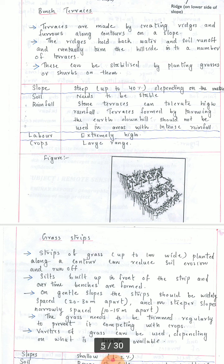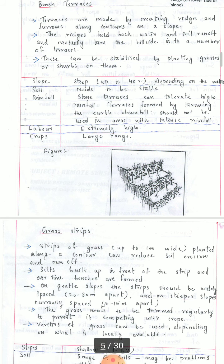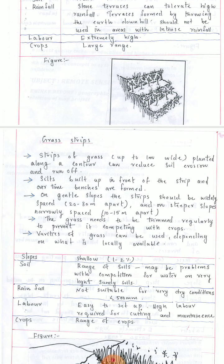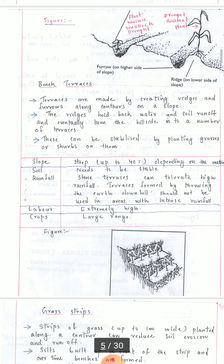The third technique is bench terraces. Terraces are made by creating ridges and furrows along contours on a slope, forming a step-by-step terrace-like structure for irrigation practice. The slope should be up to 40 percent depending on the method, and the soil type must be stable, since the soil is removed in step-by-step terraces. Stone terraces can tolerate high rainfall, but terraces formed by throwing earth downhill should not be used in areas with intense rainfall — medium rainfall is preferred. Labour is extremely high for maintenance. A large range of crops can be grown. The figure shows the step-by-step structure called bench terraces.